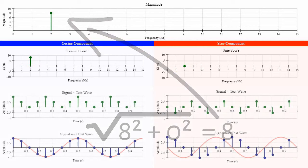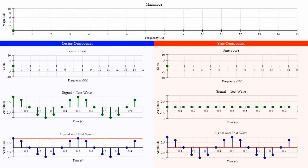Now, for this first frequency, 0Hz, we get a score of 0, for both the cosine component and the sine component. This produces a magnitude of 0, telling us that there is no 0Hz component in this signal. Repeating the process for 1Hz produces another 0 result.